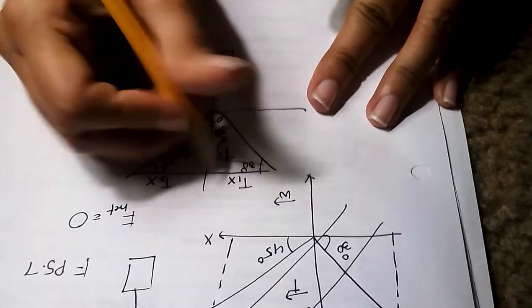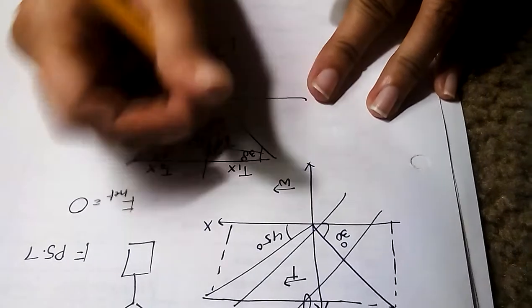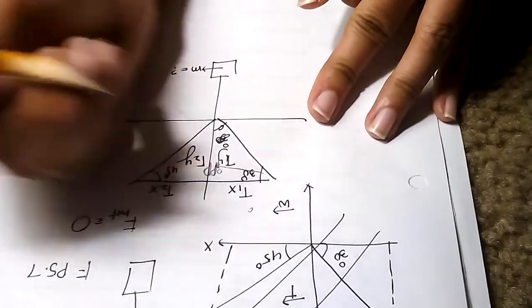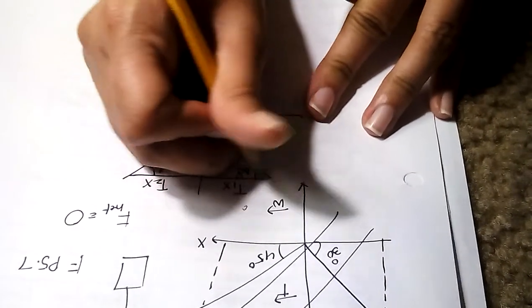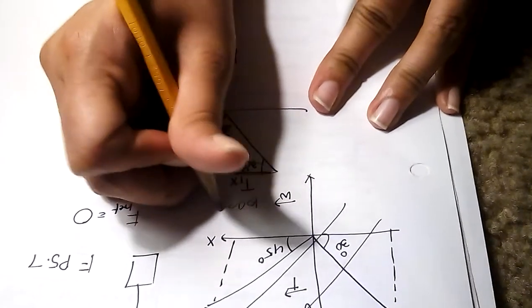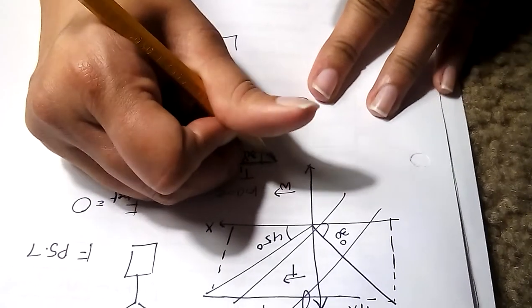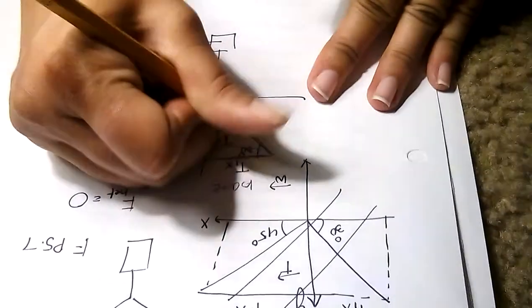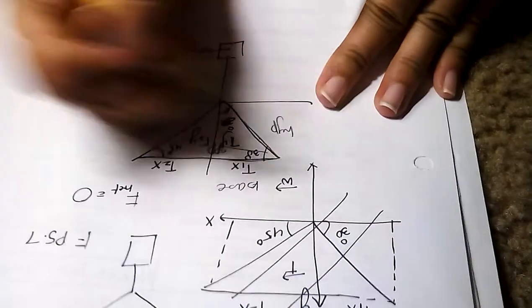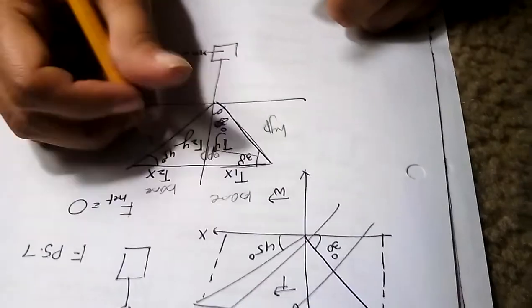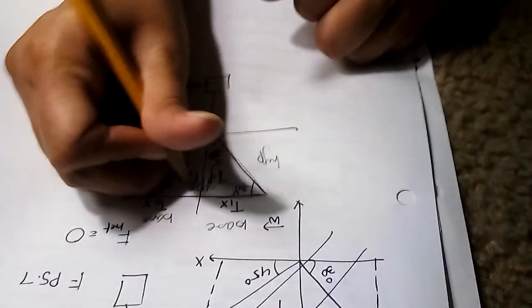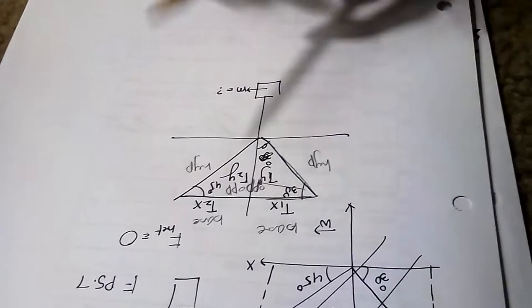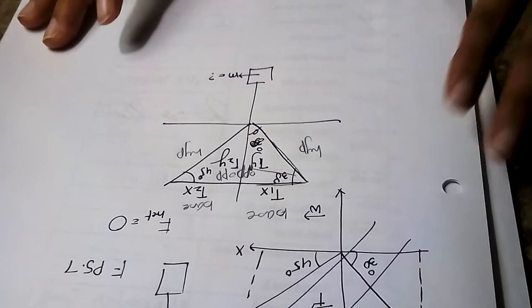So that is your 30 degrees, that is your 45 degrees. That is your mass which you have to find out. That will be your t1x, that will be your t2x, this will be your t1y, that will be your t2y.